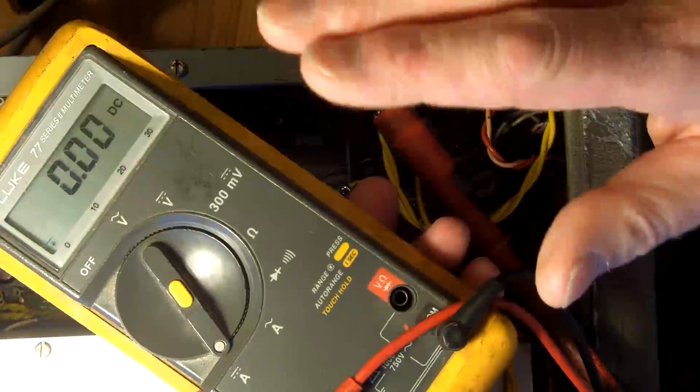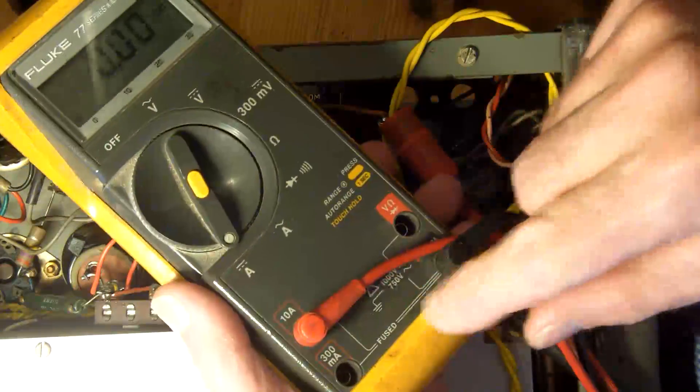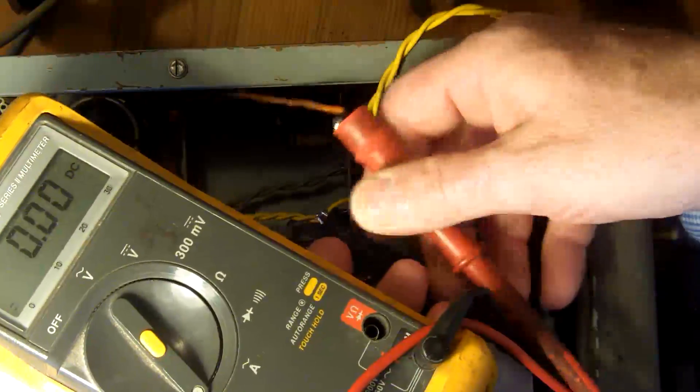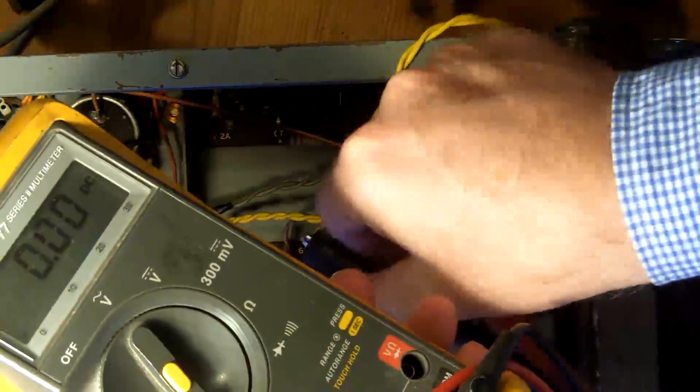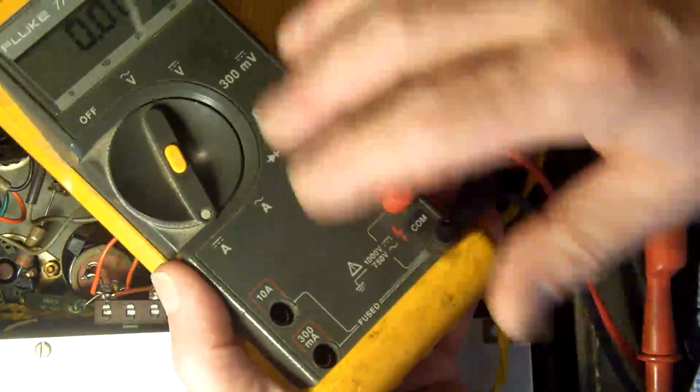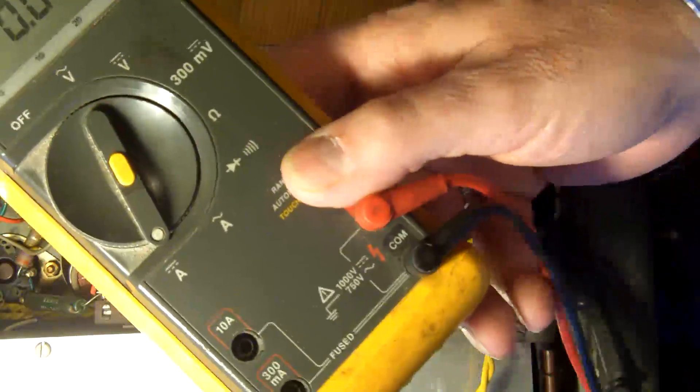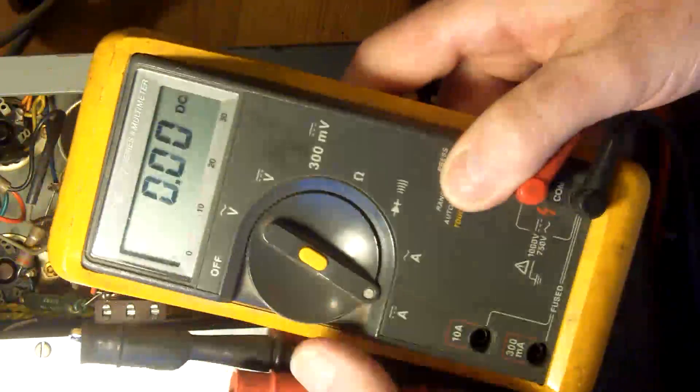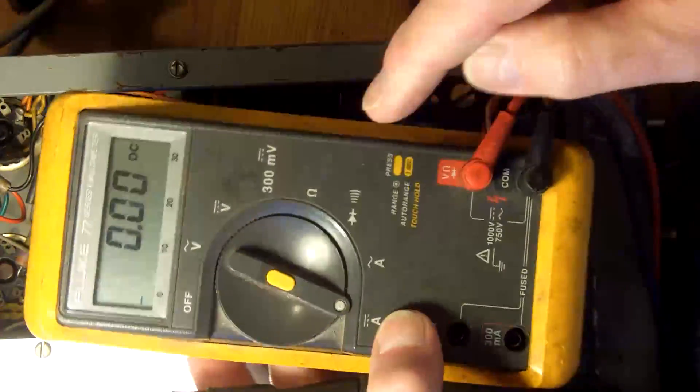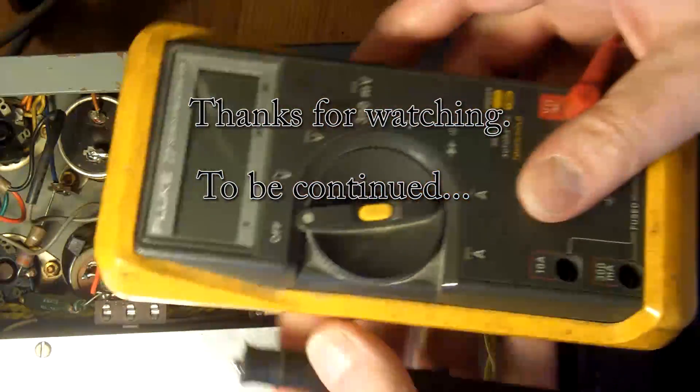Something I'll mention is after you've been working on the amps range, once you've got your meter disconnected from the circuit, always, always, always put it back into voltage if you've got a meter like this. Because otherwise, the next time you go and make a voltage test, if it's left in the amps range, you can have a very nasty surprise.